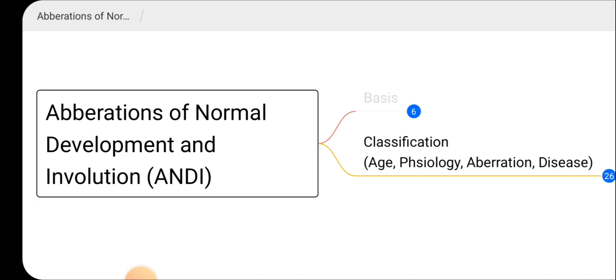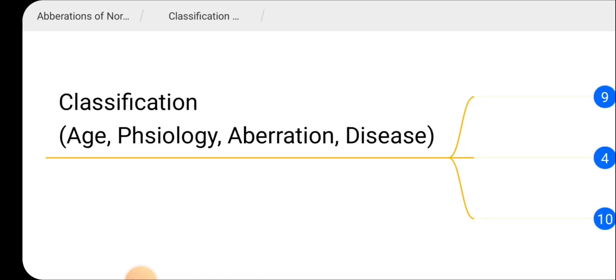Let's look at the classification. We will consider the age groups, the physiology in each age group, the aberrations which can occur with the physiology, and the diseases which can arise from those aberrations. First, let's look at the age group 15 to 25 years, which undergoes development.